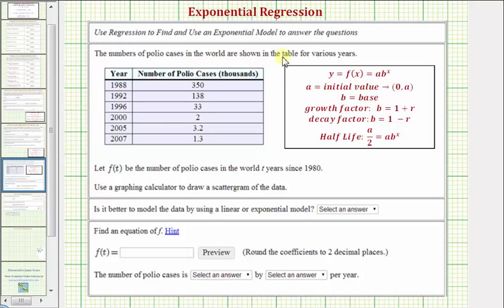The number of polio cases in the world are shown in the table for various years. Notice how we have the year in the first column, and the second column we have the number of polio cases, but notice how it is in the thousands. We want to let f(t) be the number of polio cases in the world, t years after 1980.